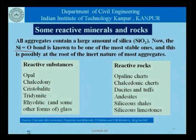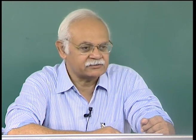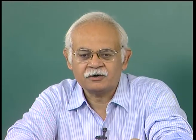The rocks containing these reactive minerals could be opaline cherts, chalcedonic cherts, dacites and tuffs, andesites, siliceous shales, siliceous limestones and so on. It is really a matter of identifying what is the principal mineral in the rock which an engineer wants to use as an aggregate at a given site. Once that analysis has been done, it is easy to identify and plan whether or not the concrete to be used at a particular site is likely to suffer alkali aggregate reaction.